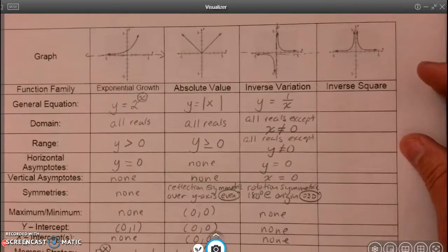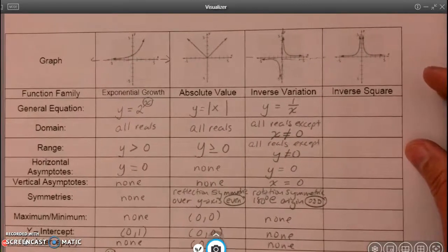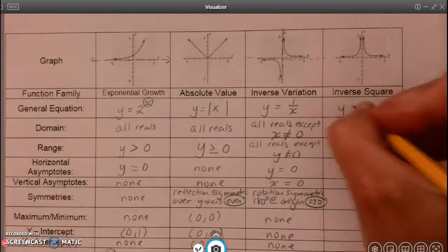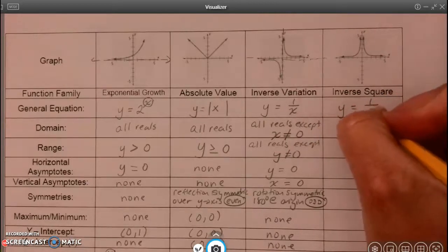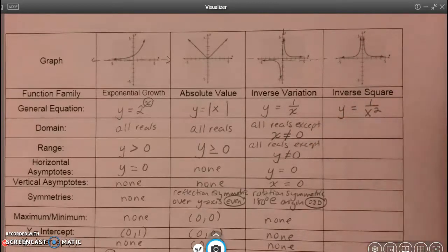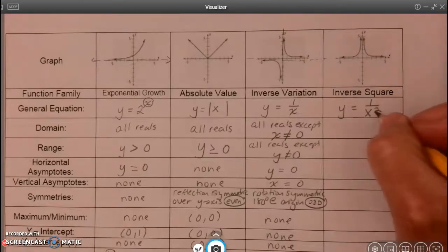So we're now at the inverse square parent function, which is y equals 1 over x squared, or 1 divided by x squared. Once again, the domain can't be zero because you can't have zero in the denominator.